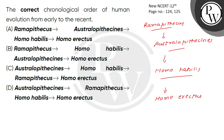Fossils found in 1891 — Homo erectus. They were eating meat, had a cranial capacity of 900cc, and had a large supraorbital ridge.